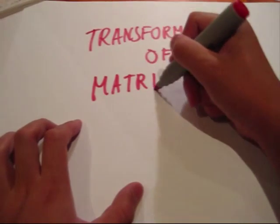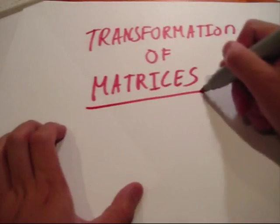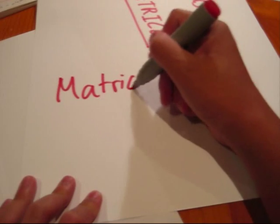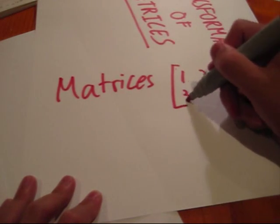Now, I'm assuming you already know matrices, but here's just a brief overview. A matrix is a rectangular array of numbers, symbols or expressions, like so.